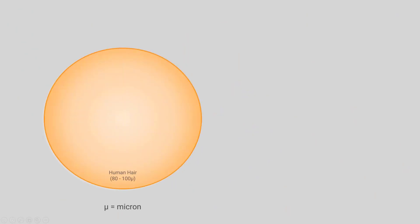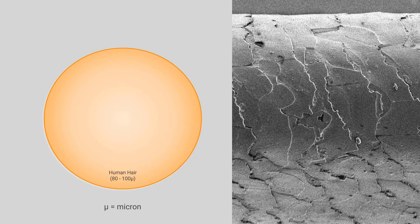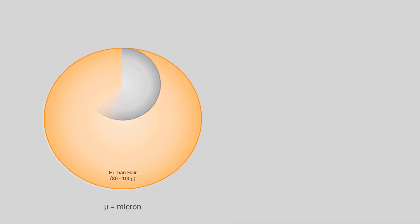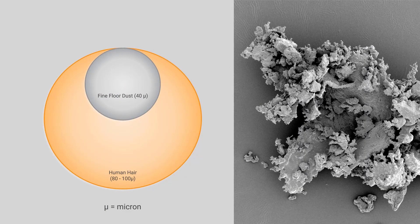So take, for instance, if we're looking at human hair. We have a human hair and looking at the cross-section of it, that is going to be somewhere between 80 to 100 microns across. Now, the smallest you can see with the naked eye is about 40 microns. That's about half the human hair. And this is going to be equivalent to fine dust.